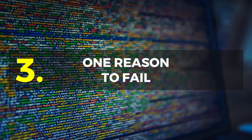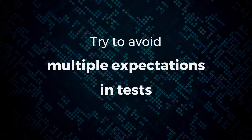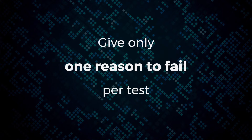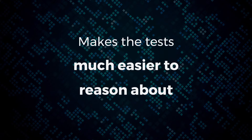Number three: give your test one reason to fail. Always try to avoid multiple expectations in a single test — if you're testing multiple things, how do you know what actually failed? You want one reason to fail per test. This makes a test much easier to reason about so you can understand what has failed and easily fix the code.